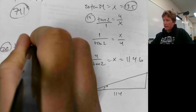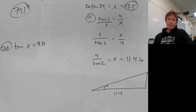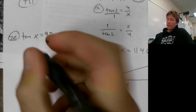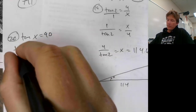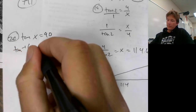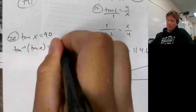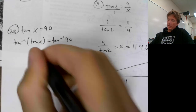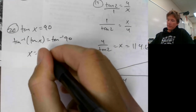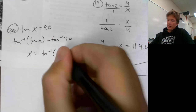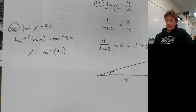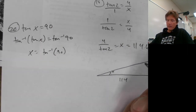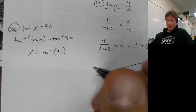Number 20, last one: tangent of X equals 90. I can take the inverse of each side. X equals inverse tangent of 90. Punching that into the calculator gives 89.36.